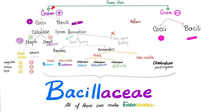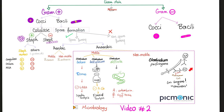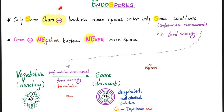Clostridium perfringens is a gram-positive bacillus. Is it spore-forming? Yes, although rarely. Aerobic or anaerobic? It's anaerobic. Motile or immotile? Immotile. Diseases include gas gangrene and food poisoning. Can they make spores? Yes, they can. Some gram-positive bacteria make spores, but gram-negatives never make spores.